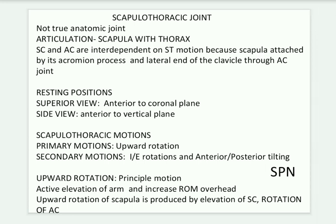Next is the scapulothoracic joint, which connects the scapula and thorax. It is not a true anatomical joint. The articulation between the scapula and thorax means the sternoclavicular and acromioclavicular joints are interdependent on scapulothoracic motion, since the scapula attaches to the clavicle via the AC joint. In the resting position, viewed from the superior and side views, the primary motion is upward rotation.